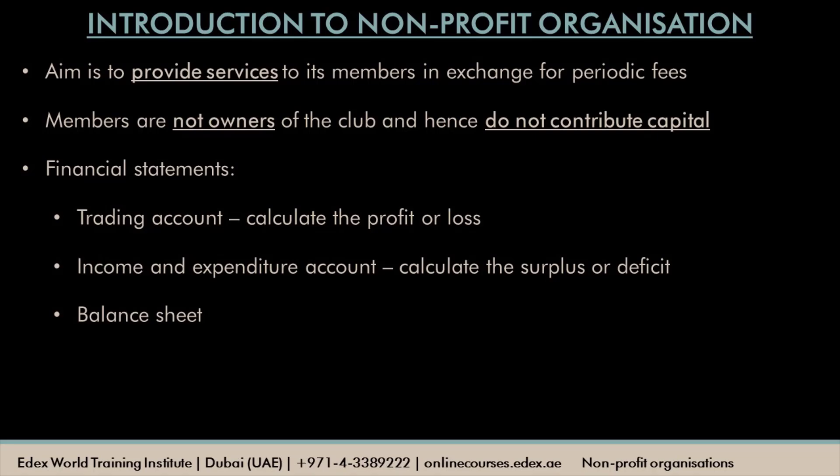The trading account is prepared to calculate the profit or loss from the trading activity that happens within the club. The main aim of this trading activity is to provide members with goods and services while they are in the club — there could be a profit or a loss. Then we prepare the income and expenditure account, recording all revenue receipts following the accrual concept, and all revenue expenditure following the matching concept. The profit from the trading activity goes on the income side; a loss goes on the expenditure side. We then calculate the surplus or deficit, which is transferred to the balance sheet in the accumulated fund.